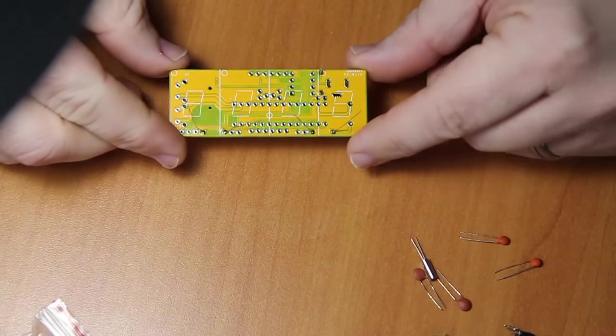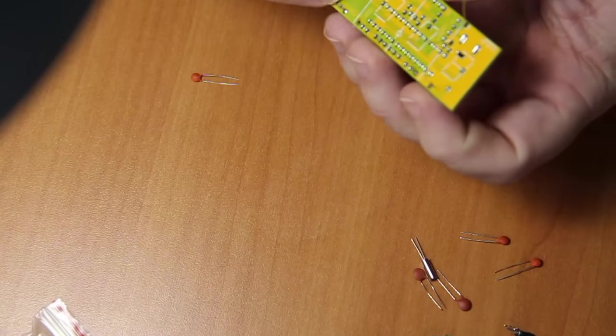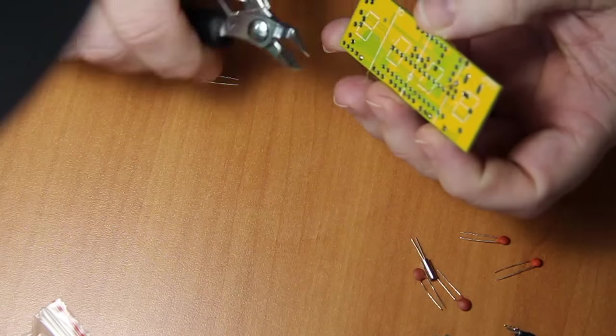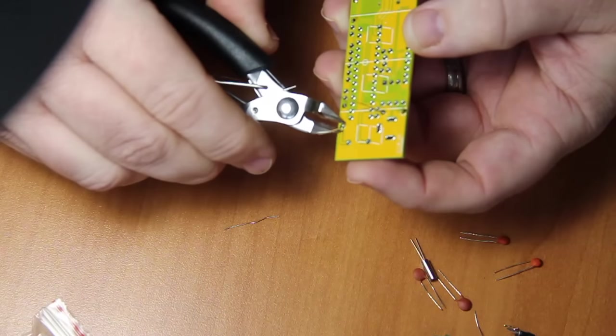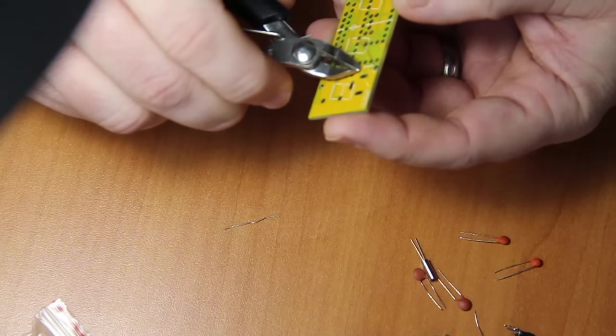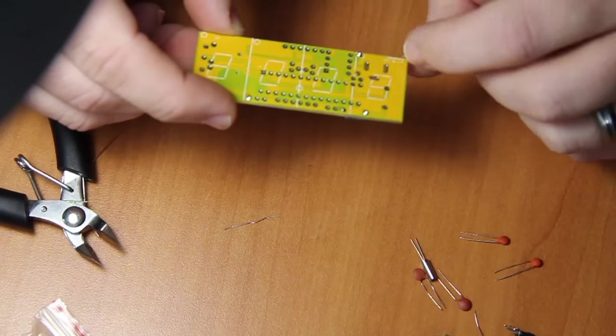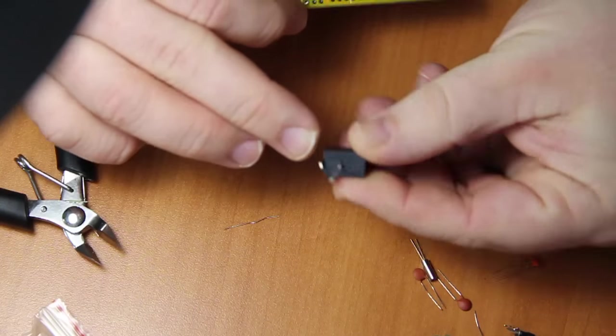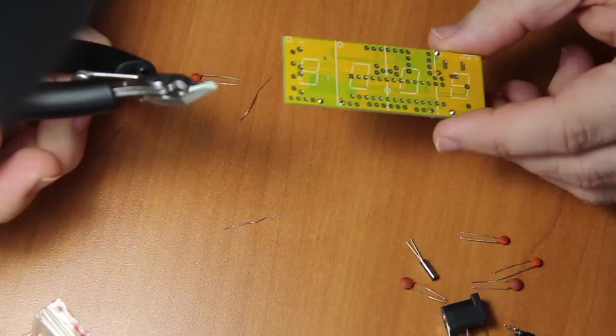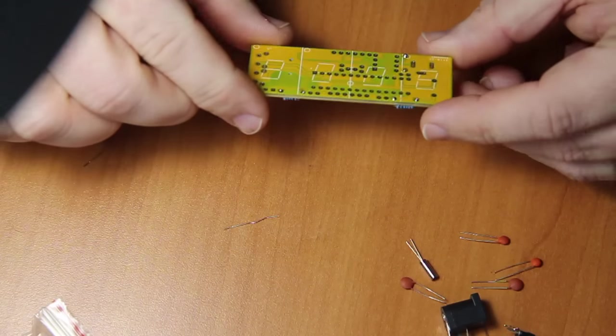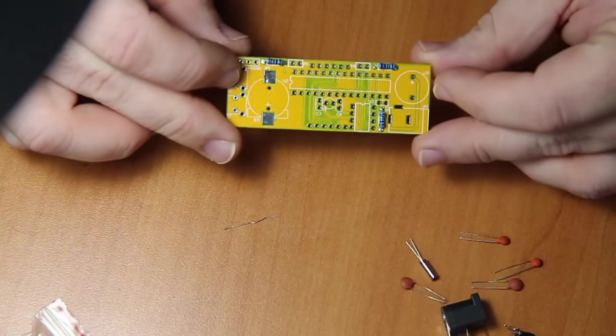Once that is done, very important with this build: make sure that the leads are clipped extremely short. That'll become apparent why later when you try to put the case together - there's not a whole lot of clearance or room in the case. That's especially important on the power supply connector. If you've got a nice pair of clippers like these, bought these online on AliExpress for about three bucks, they work very great.